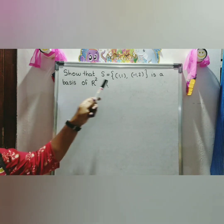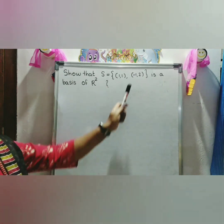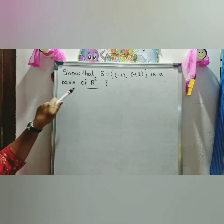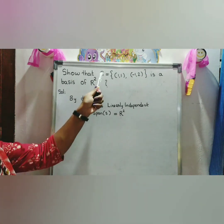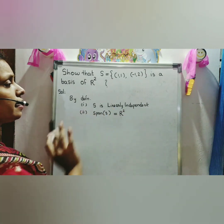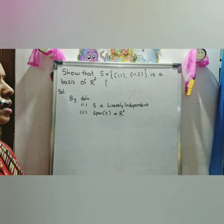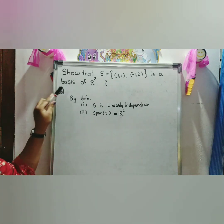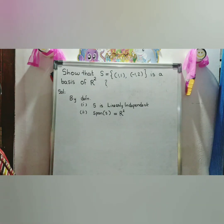Problem: Show that S = {(1,1), (-1,2)} is a basis of R². Here we want to show that the set S is a basis of R². By definition, we want to prove that S is linearly independent and span of S is equal to R². If it satisfies these two conditions then we say that S is a basis of R².